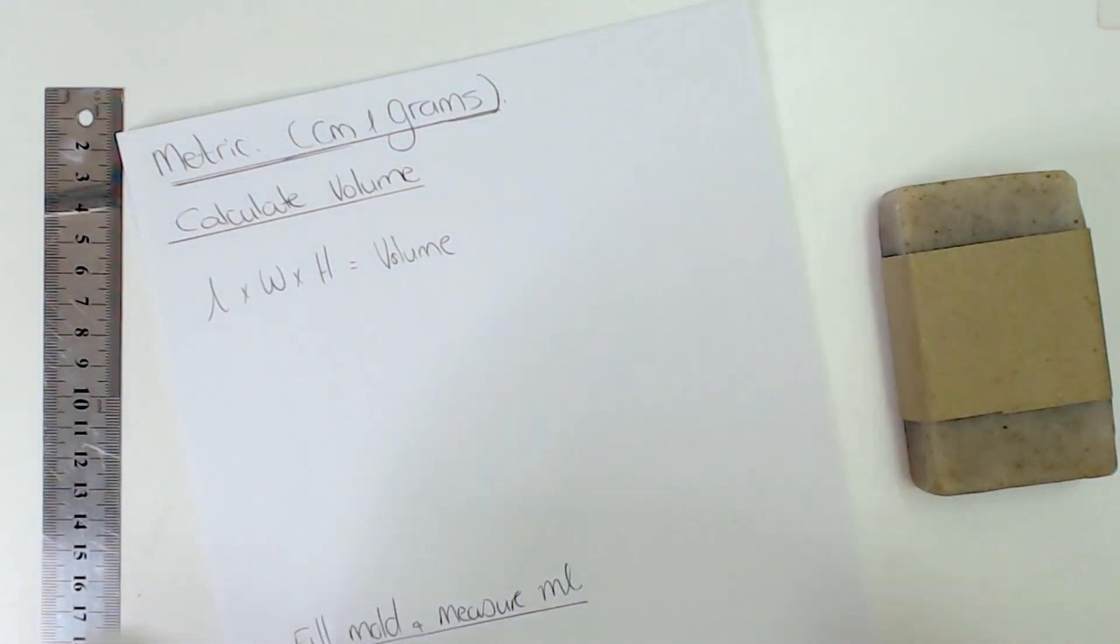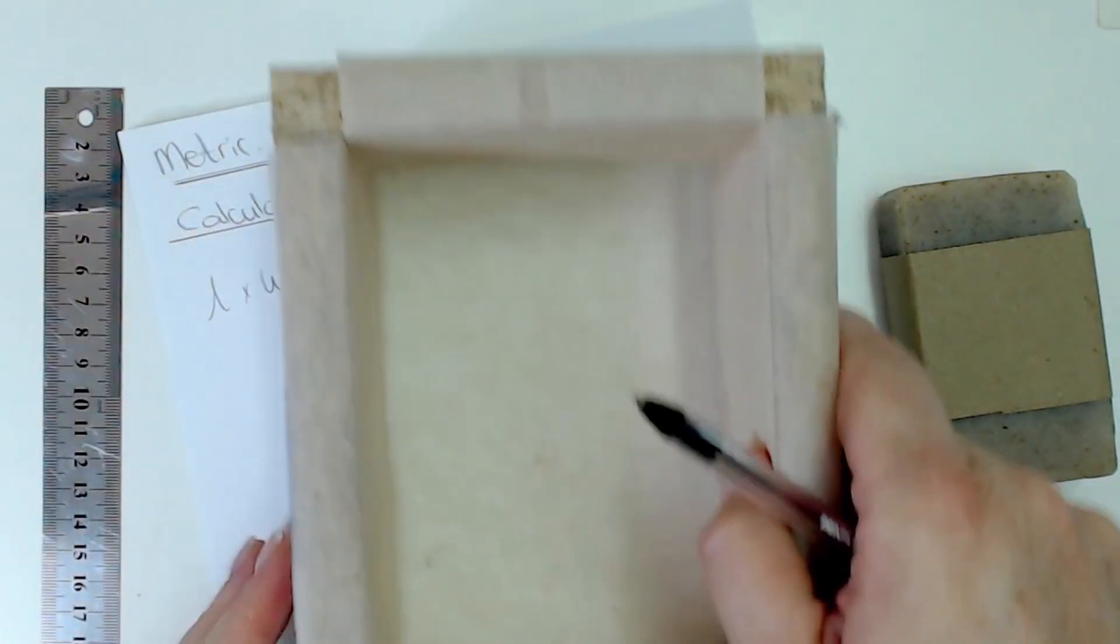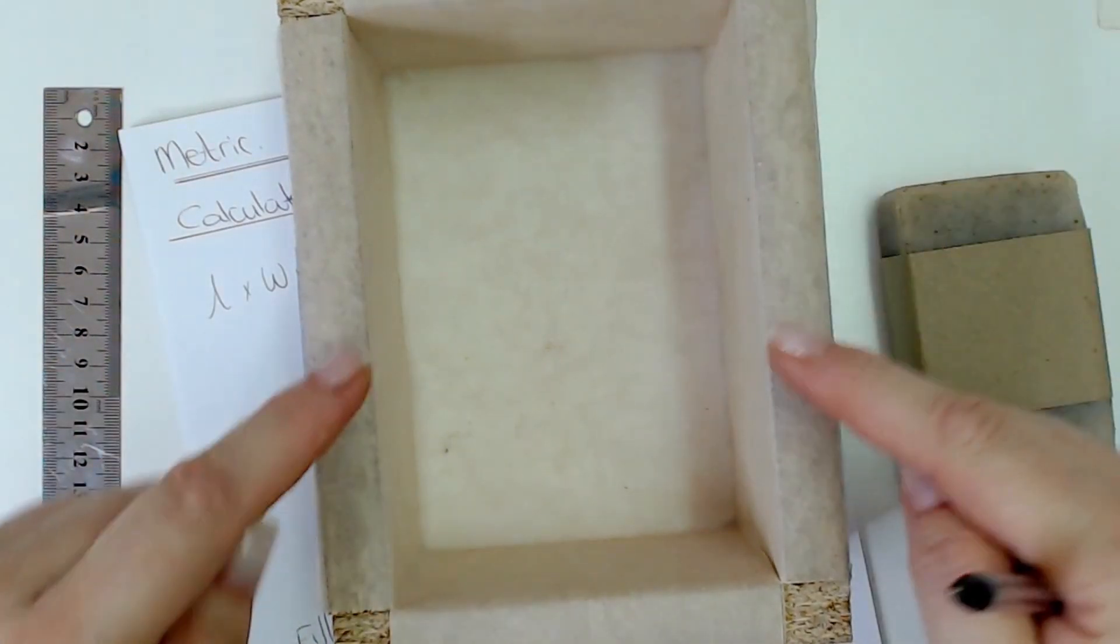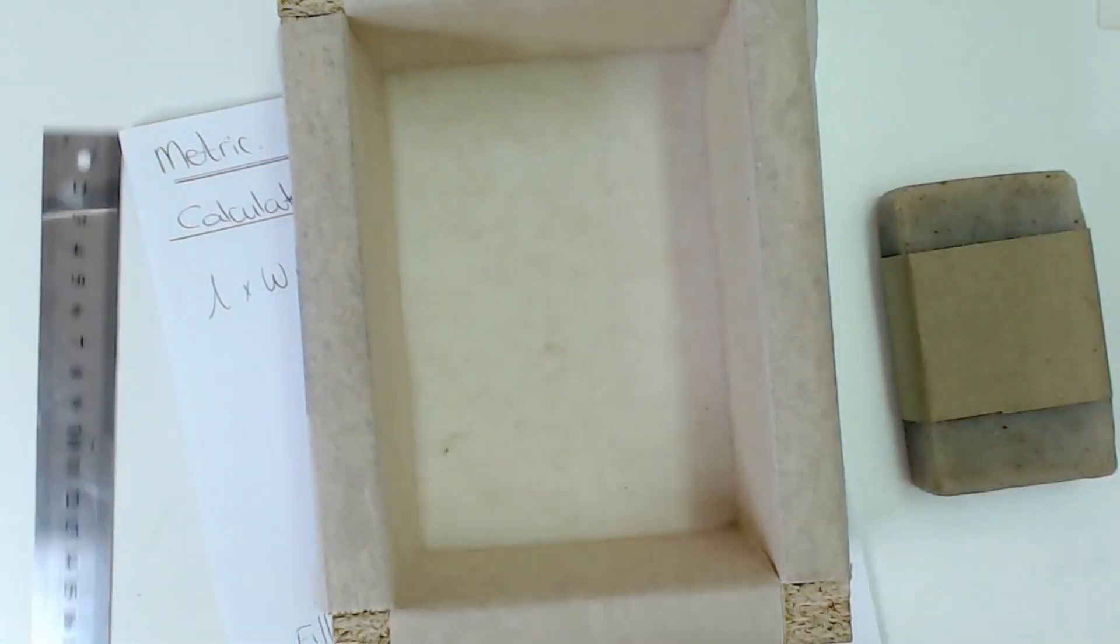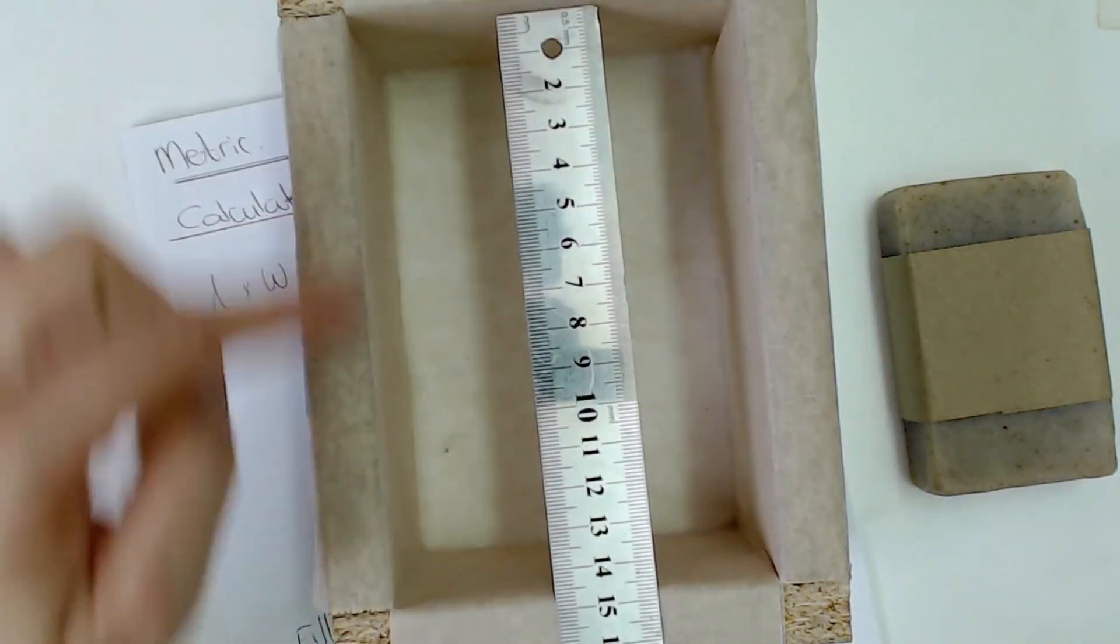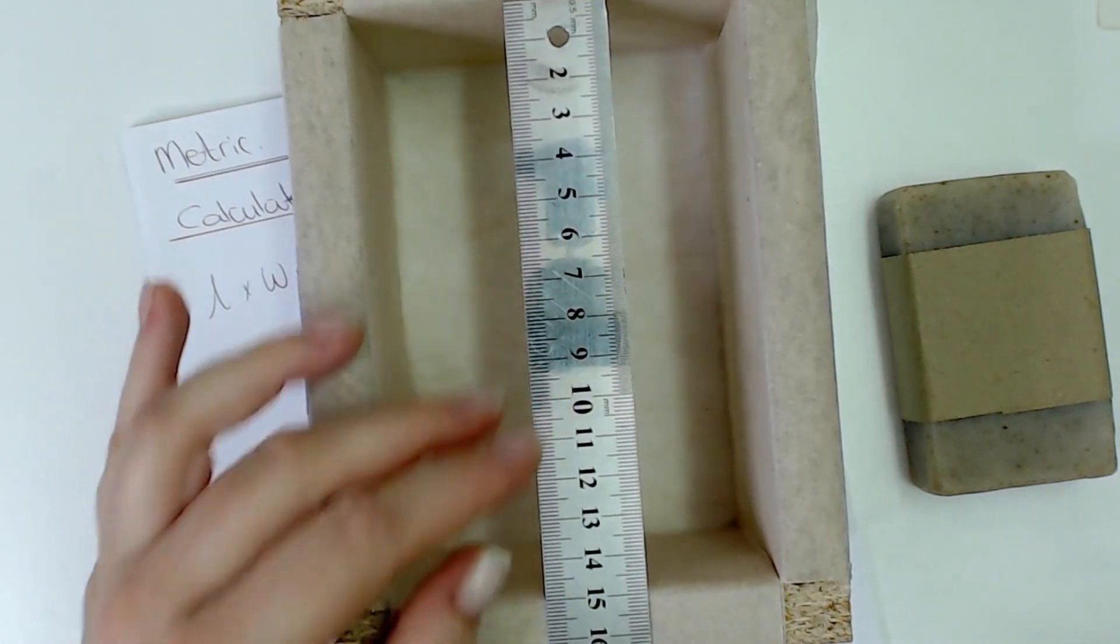So the first one up is a rectangular mold. You can use this for rectangular molds or square molds. What you're going to do is we're going to measure the length, we're going to measure the width, and then we're going to measure the height. Now we're going to take the inside measurements not the outside because we need the inside volume here.